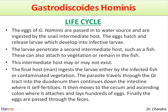This second intermediate host — the fish — may or may not exist. The final host, man, ingests the larvae either from infected fish or by eating contaminated vegetation. The parasite then travels through the gastrointestinal tract into the duodenum and continues down the intestine, where it self-fertilizes.